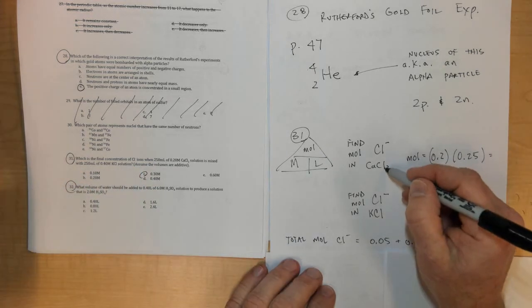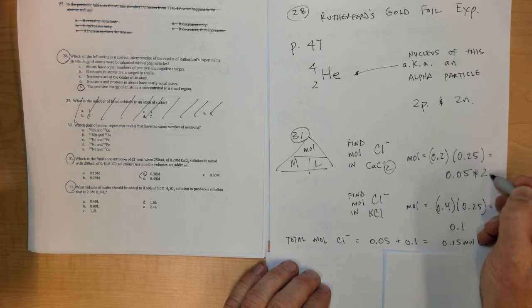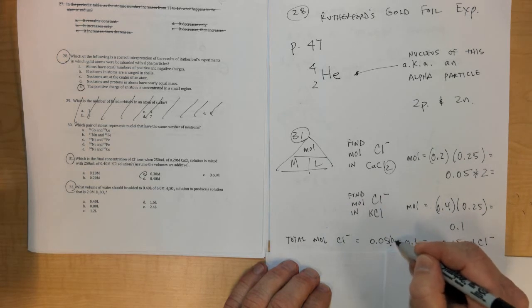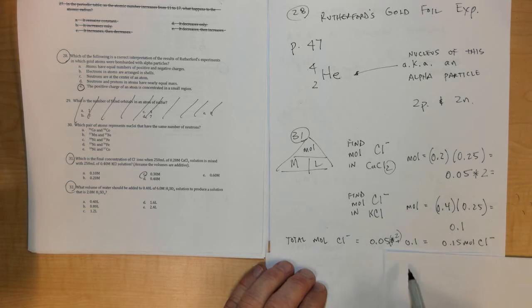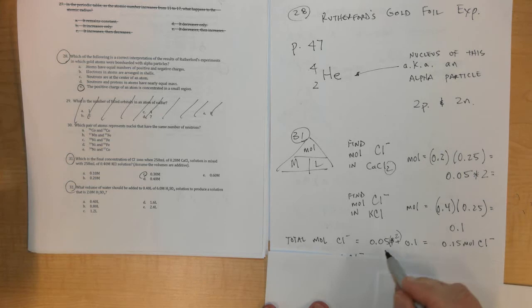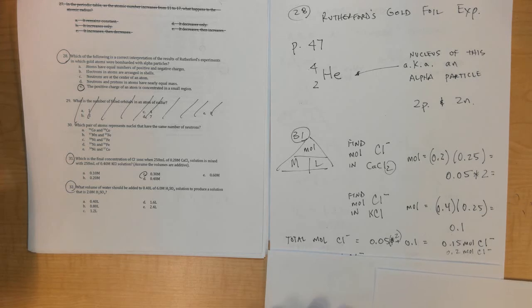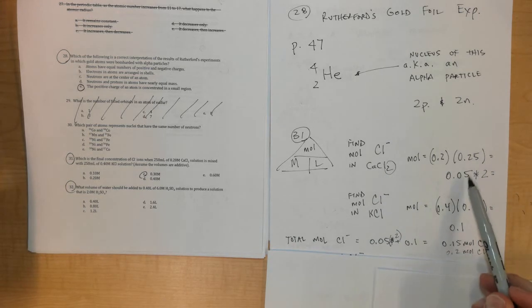When you multiply these together, notice there are two of these chloride ions so I would need to multiply this by 2. When I do this I'd get 0.15, I'd actually get a total of 0.1 plus 0.1, or 0.2 moles of Cl minus total inside of this because I get double the amount from right here than just the 0.05.